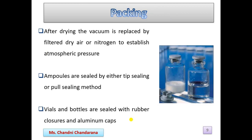After drying, the packing stage begins. The vacuum is replaced by filtered dry air or nitrogen to restore atmospheric pressure. The product, now in powder or solid form, is filled into ampules, vials, or bottles. Ampules are sealed by tip sealing or pull sealing, while vials and bottles are sealed with rubber closures and aluminum caps.